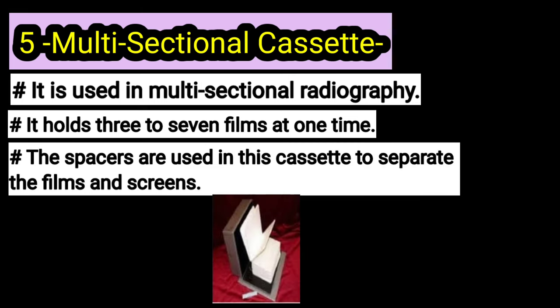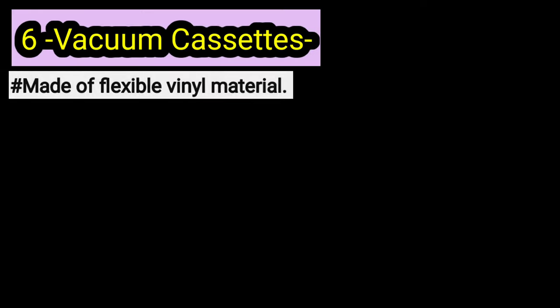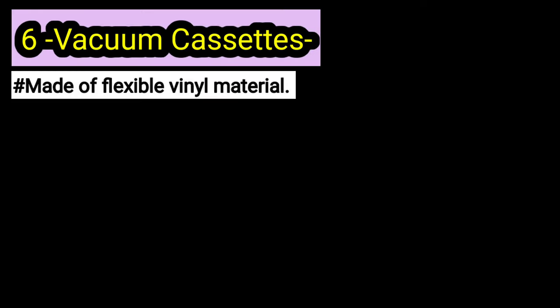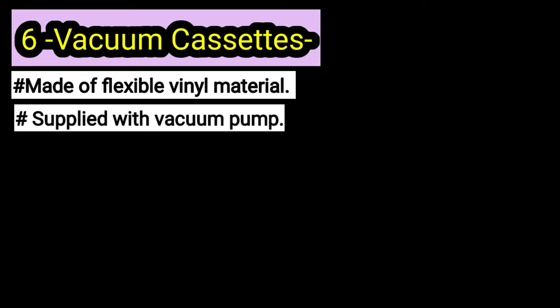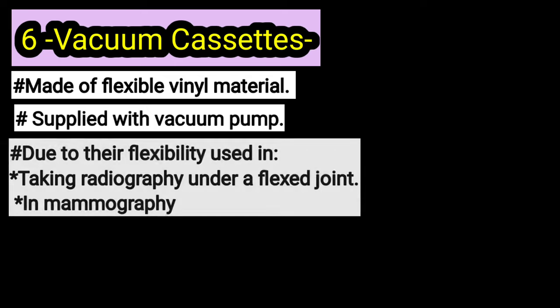Spacers are used between the films. After that are vacuum cassettes, which are flexible cassettes. The film has to be loaded under vacuum, and after loading, the vacuum is released so that good screen-to-film contact is achieved. These were also used for curved body parts.